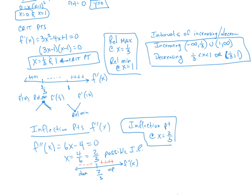We have the intervals of concavity now. It's concave down from negative infinity to 2 thirds, and concave up from 2 thirds to infinity. You can write this as x less than 2 thirds or x greater than 2 thirds. Know both notations because you'll see both on the AP test.